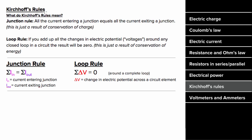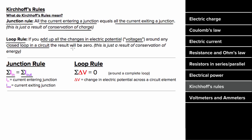Two of the most useful ideas in circuits are Kirchhoff's Rules. The first is the Junction Rule: all the current entering a junction must equal all the current exiting that junction, because current is flowing charge and charge is conserved — no charge can be created or destroyed at any point in the circuit. The second is the Loop Rule: if you add up all the changes in electrical potential (voltages) around any closed loop in a circuit, they always sum to zero. This is a result of conservation of energy — electrons gain energy from the battery and lose energy through resistors, and those amounts must balance.